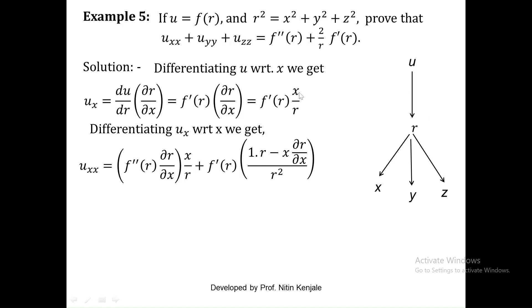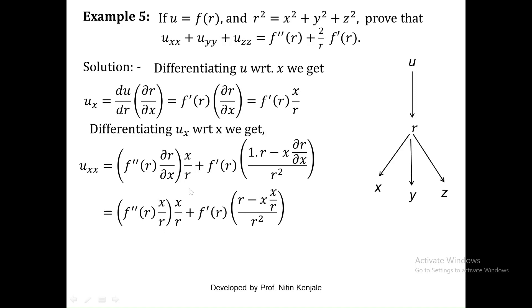For the division rule we consider u as x and v as r. So the first term is: derivative of x is 1, times r as it is, minus x as it is times derivative of r with respect to x, all over r square. We know ∂r/∂x is x by r, so we substitute that. After cross-multiplying we get r square minus x square over r, all divided by r square, which simplifies to r square minus x square over r cube.